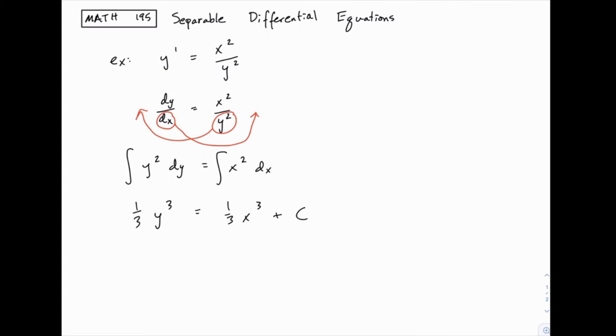Notice I only put plus c on the right side. I could have put plus c on both sides, but of course we can combine all the arbitrary constants on one side of the equation, so it's most convenient just to put it on the right side there with the x's.